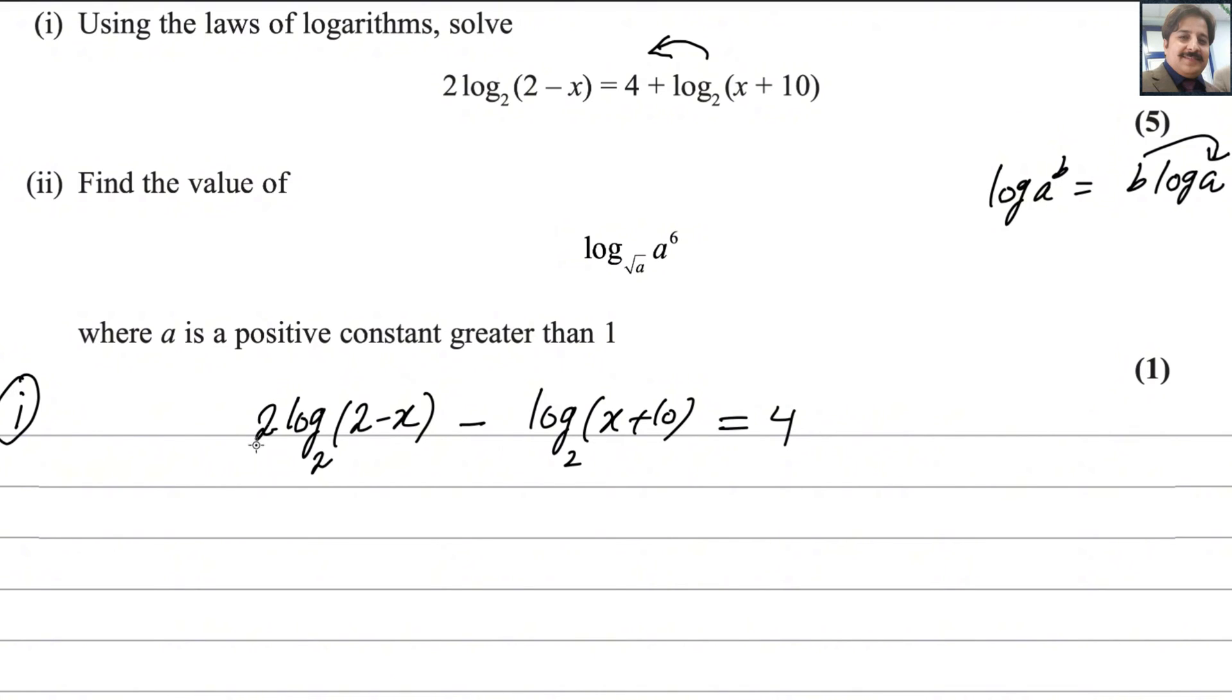So we can write this multiple becomes the power of this one. So we can write as log₂((2-x)²) - log₂(x+10) = 4.